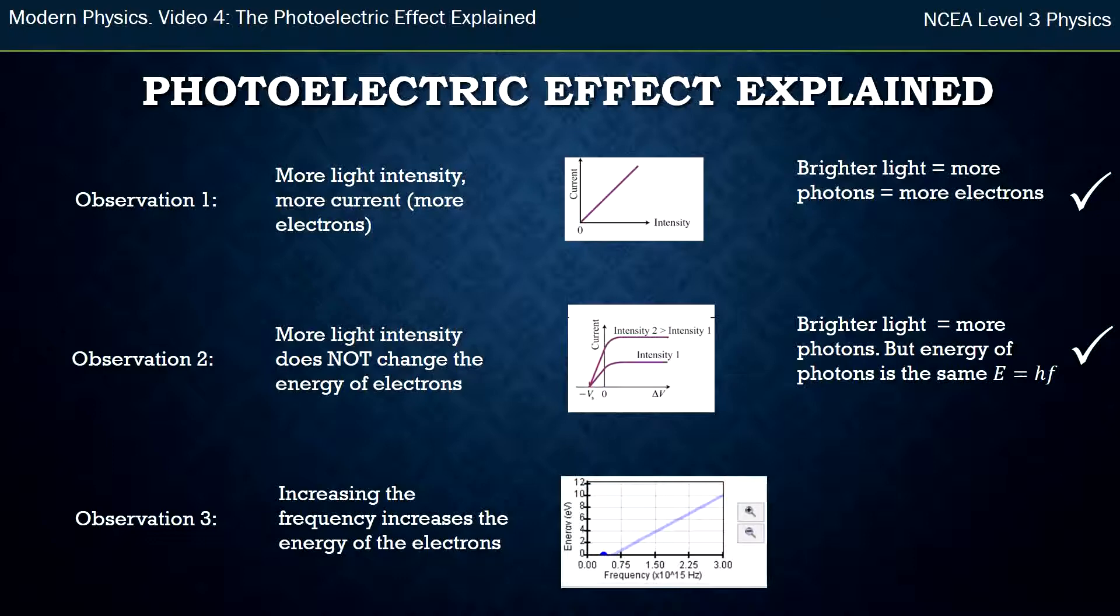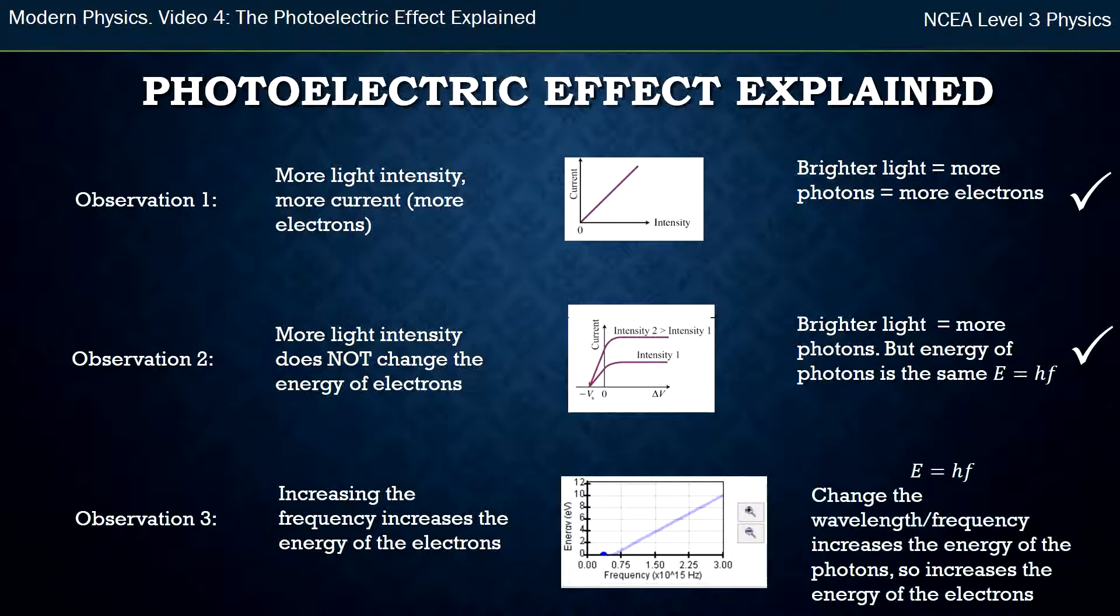The third observation was when we change the frequency, we change the energy of the electrons that came off. So Einstein said that the energy of a photon is proportional to its frequency. If we change the frequency of the photon, it increases the energy of the photon, the energy of that photon hits an electron, and therefore that increases the energy of the electron as well. So that is all explained by using this photon model of light.